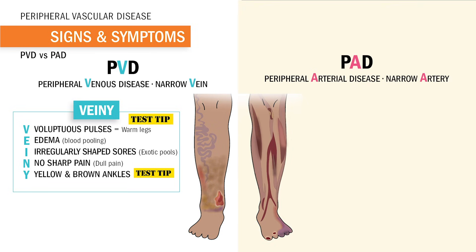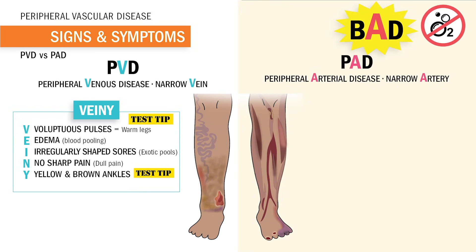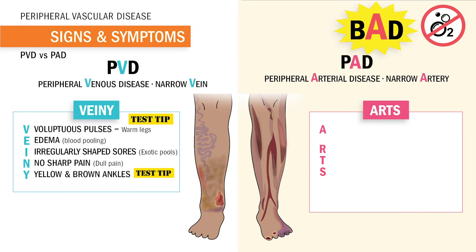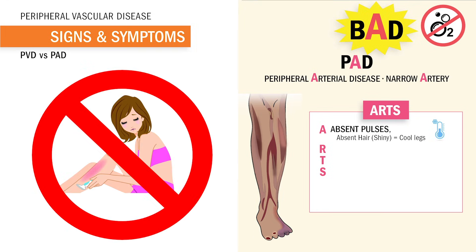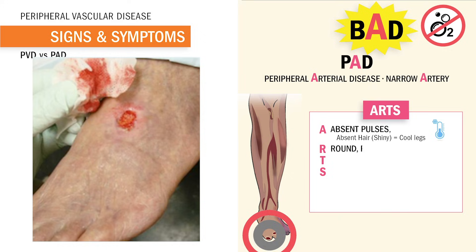Now PAD is even worse, and everyone knows that. Think BAD because it's bad — bad because we have low oxygen in the arteries. So use the acronym ARTS for artery. A is for absence of pulse and absence of hair, so we have shiny, cold legs. Imagine never having to shave those legs ever again. R is for round, red, smooth sores. Unlike those exotic pools in PVD with weird shapes, in PAD we have red sores, also called RUBER. Remember R for red.